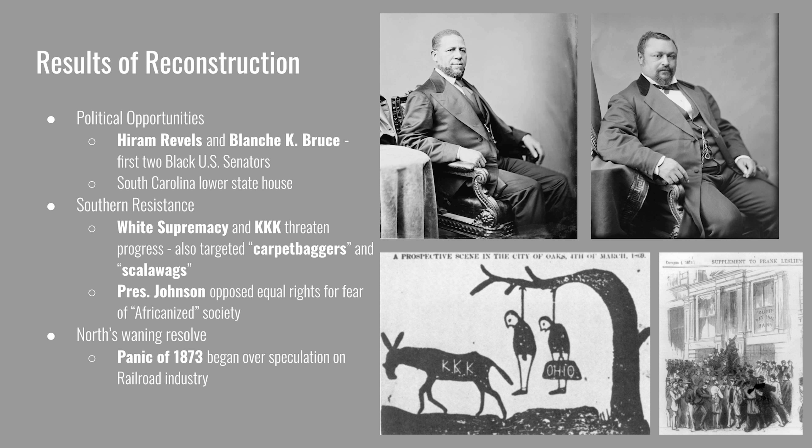Finally, the North's waning resolve led to the end of Reconstruction. Eventually the North could no longer put the same pressure on the South to continue. In 1873, a financial panic began over speculation in the railroad industry, causing bank runs across the North. As the economic situation worsened, there was much less support for continuing Reconstruction in the South. The next lecture will cover the event that formally ends Reconstruction: the election of 1876.